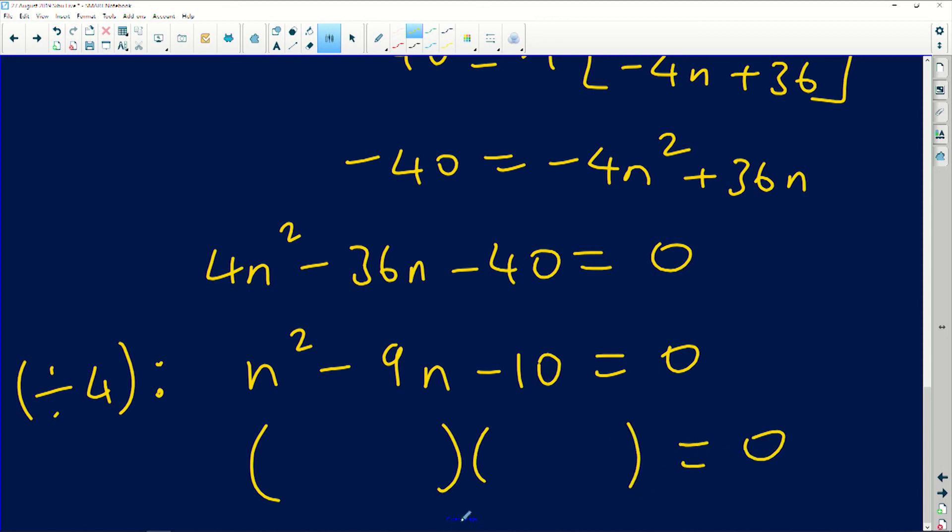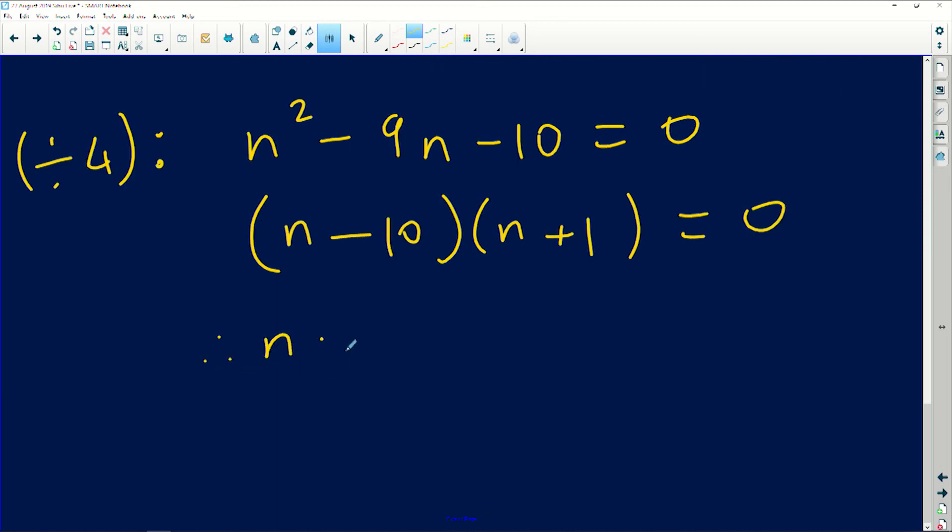The factors of n squared are n and n. Factors of 10 that will give us 9 are 10 and 1. The bigger number takes the sign of the middle term, so this one becomes a plus. From here we can see that n equals 10 or n equals negative 1. But we know n cannot be negative 1 because n is an element of natural numbers, which means n can only be a natural number. So n equals 10.